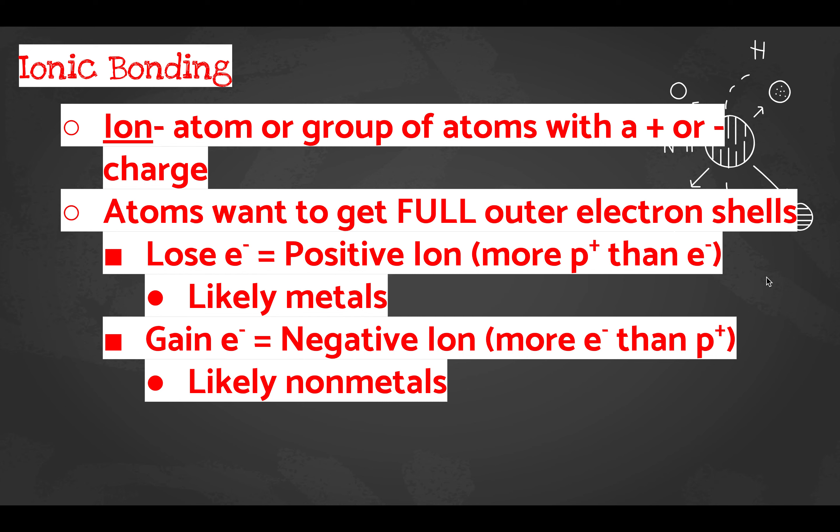We have different types of bonding depending on what happens with those valence electrons. Most elements are neutral, meaning the same number of protons and electrons. If an atom or group of atoms has a charge — either positive or negative — we call that an ion. Atoms want to get full outer electron shells; that's their goal.